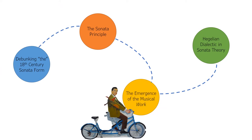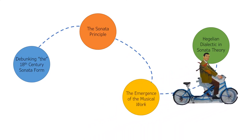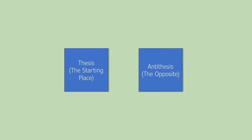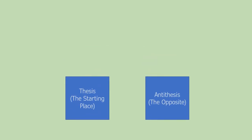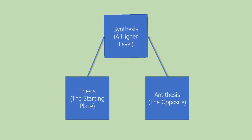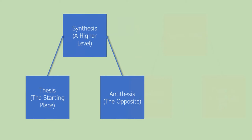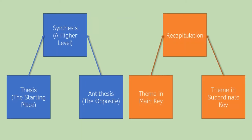Another way the tonal tension fundamental to sonata form has been thought about is through the lens of Hegelian dialectic philosophy. In Hegel, we have a starting point — the thesis — that becomes defined against a contrasting entity, the antithesis. Instead of letting these entities sit as opposites, Hegel theorizes that elements of each can be combined to form a synthesis, allowing the whole system to be raised up to another level. When reading this philosophy into sonata form, the presentation of the home key and the subordinate key act as the thesis and antithesis respectively, that become synthesized in a Hegelian dialectic.